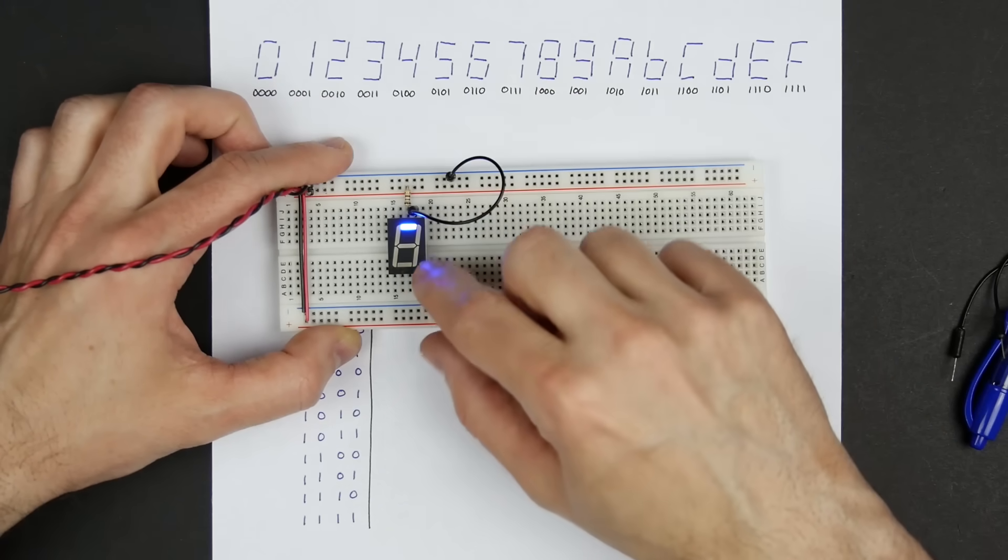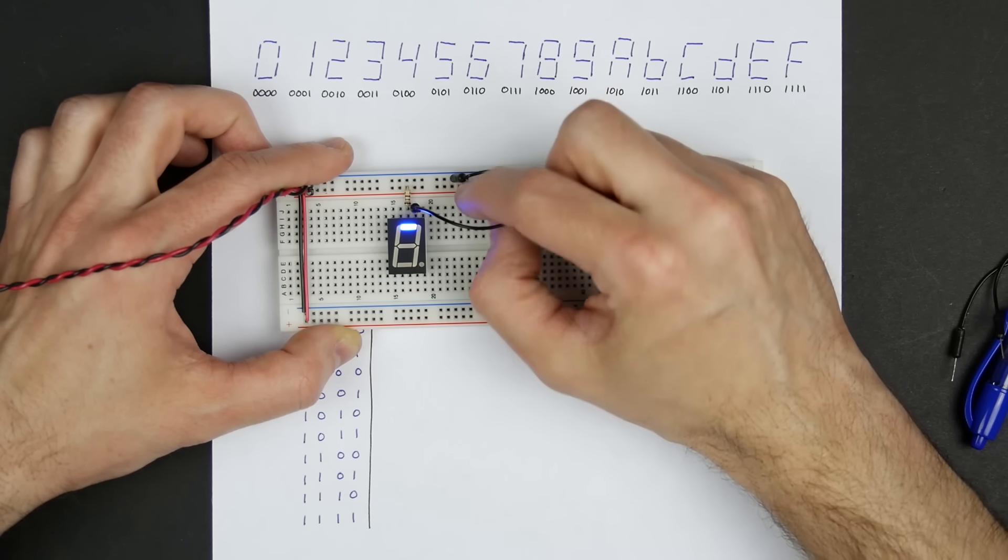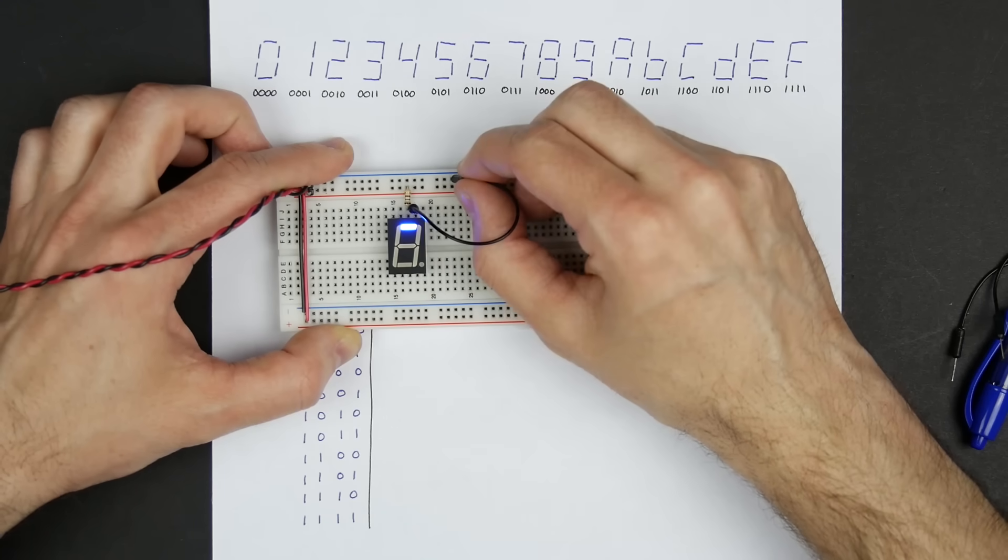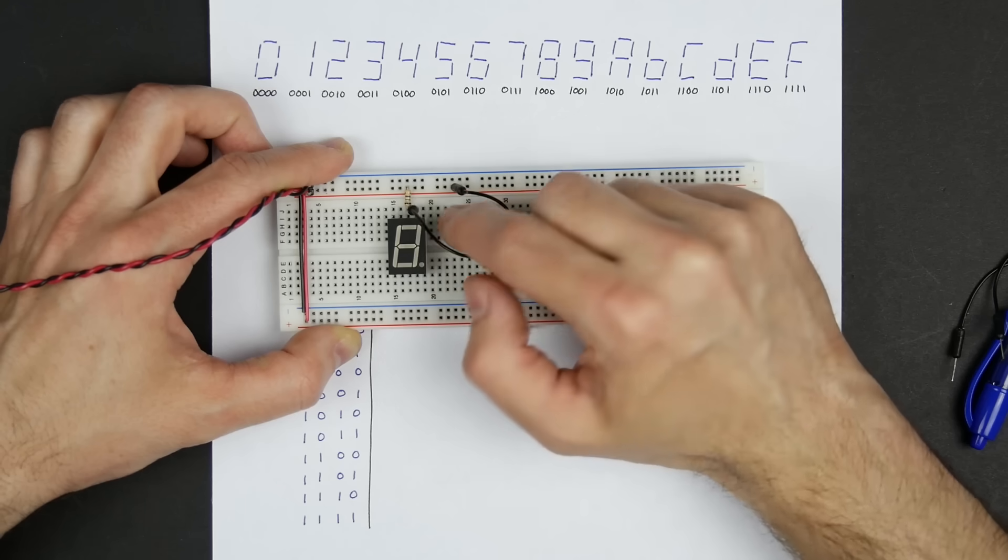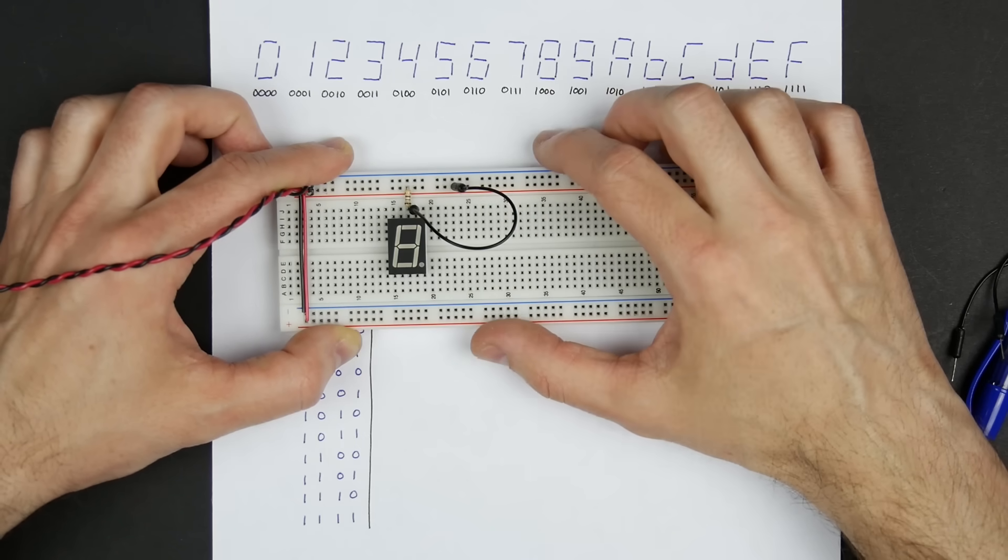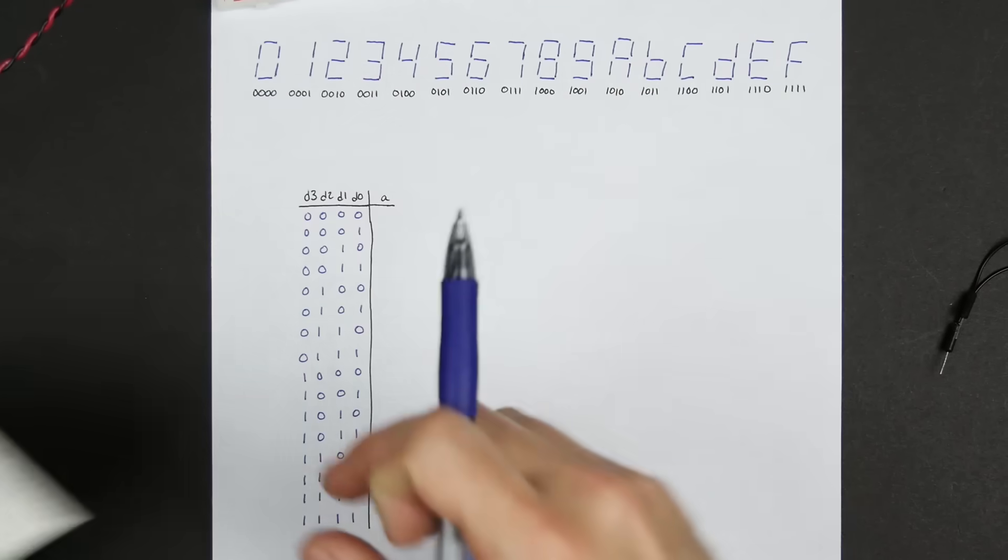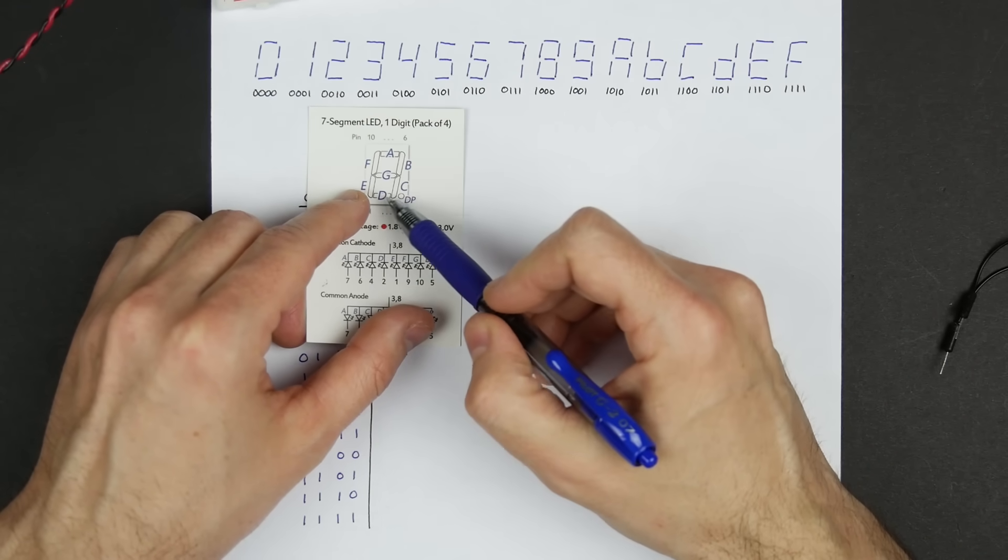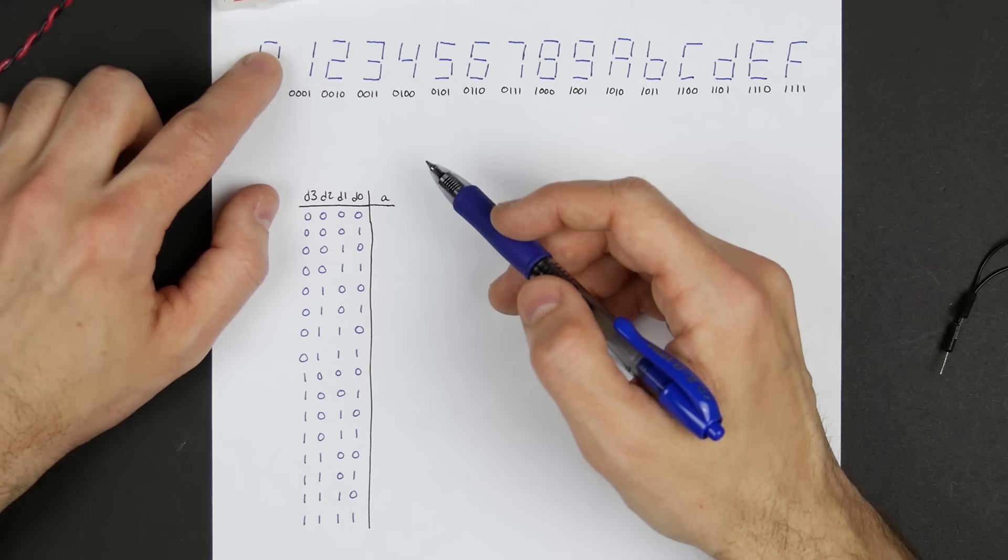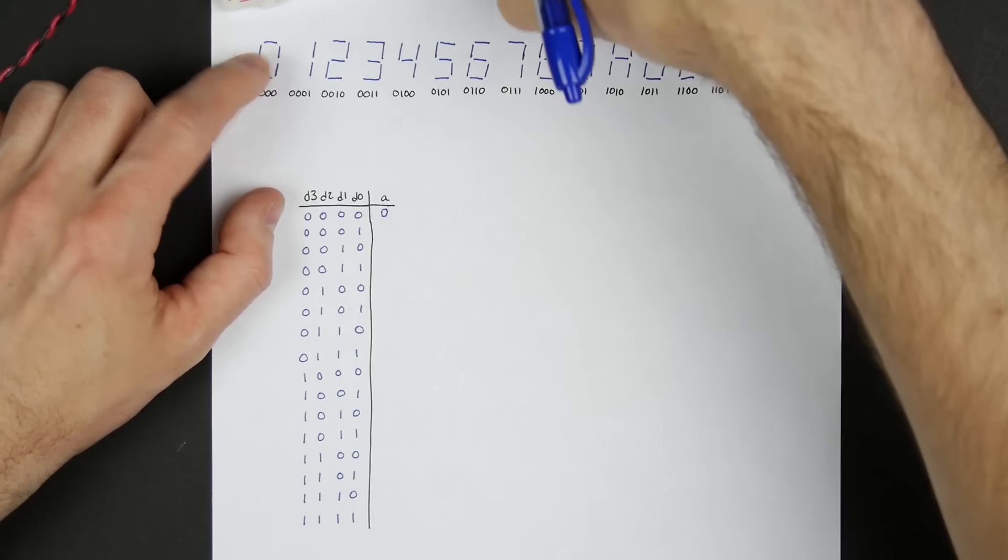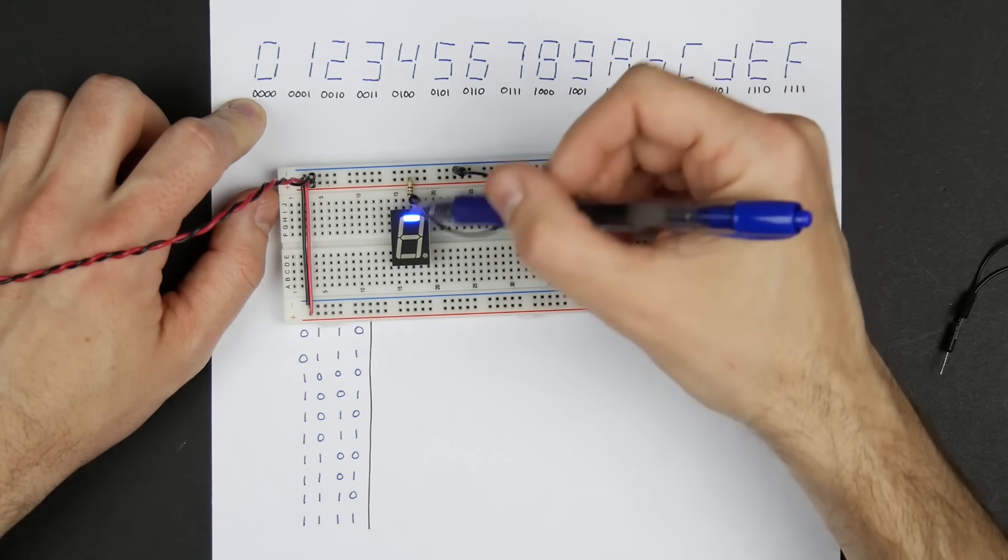If I had the common cathode one, then it would be the other way around. And you could use the same sort of logic, but since these are the ones I have, we'll do it this way. And so basically, if this input is ground or a zero, a logic zero, then that segment is on. If that pin is a logic 1, or 5 volts, then that segment's off, because you've got 5 volts on both sides of that LED, and so there's no current flowing. So with that in mind, we can come up with a truth table for that segment. And this is the A segment. Each of these segments, kind of by convention, has a letter associated with it. So A is this top one. So if we look at just that segment, for zero, it's on. So that would be a zero, because we want that segment to be on, which means we want the input for it to be at ground, or zero.